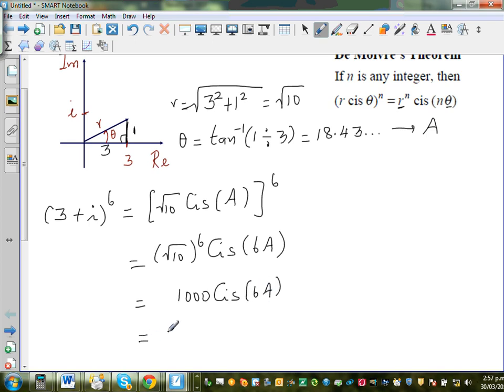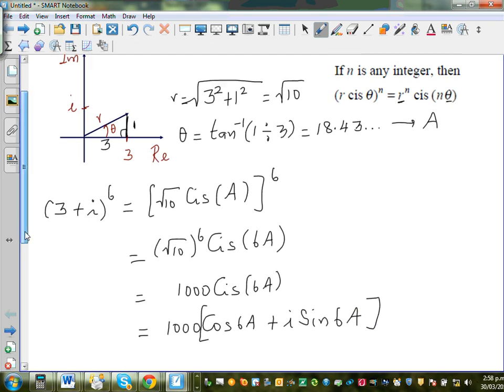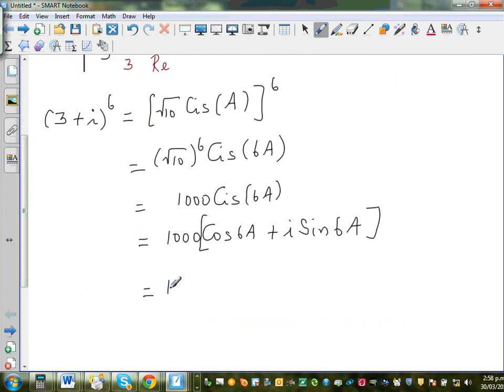So this is nothing but, so what's this is the abbreviation for? Cos. So this is nothing but cos 6A plus i sine 6A. So I'll now have to use my calculator. So again, expanding this further with 1000. So this is 1000 cos 6A plus i times 1000 sine 6A. That will give this in a plus bi form.